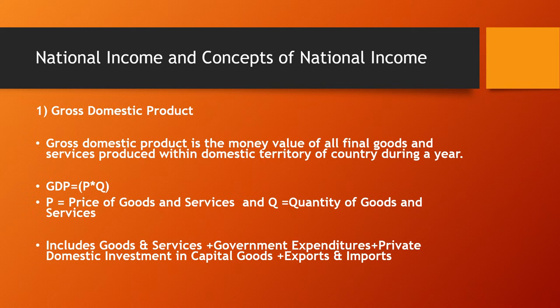Now I define Gross Domestic Product. GDP is the money value of all final goods and services produced within the domestic territory of a country during a year. GDP = PQ, where P stands for price of goods and services and Q stands for quantity of goods and services. GDP includes consumer goods and services, plus government expenditures, plus private domestic investment in capital goods, plus exports.